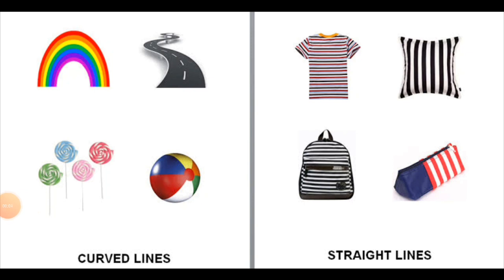These are some examples from real life. First, you can see a rainbow, a curved road, lollipops and a ball with curved lines.